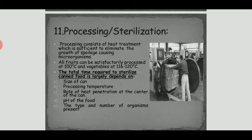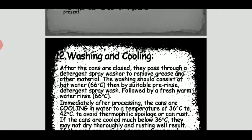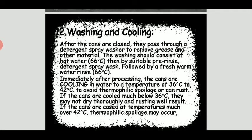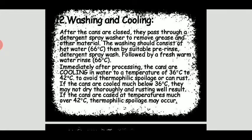Processing and sterilization involves heat treatment sufficient to eliminate spoilage-causing microorganisms — ranging from 100°C for fruits and 116°C to 120°C for vegetables. After sealing, cans pass through a detergent spray washer to remove grease and other materials that adhered during processing. They are then cooled by keeping the cans in water at a temperature of 36°C to 42°C.